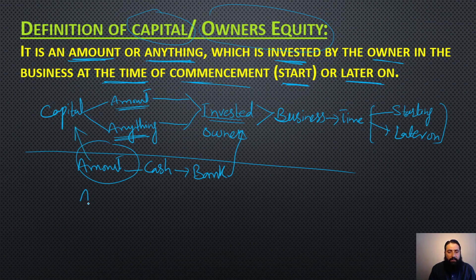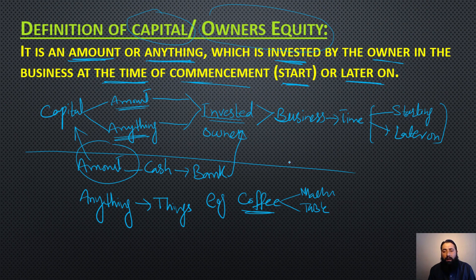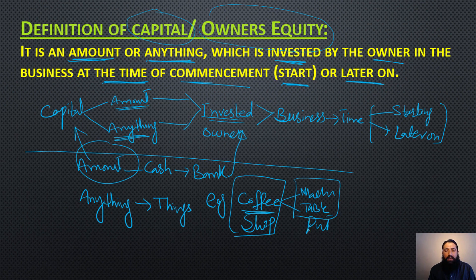The second thing is 'anything.' Anything means there are things which can also count as capital. For example, I started a coffee shop. What do I need? I need a coffee machine, I need tables, I need chairs. And all these three things I already have in my house, and I need these things in my shop. So what I will do? I will invest all these three things into the business.